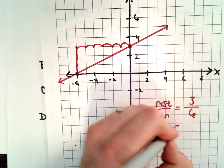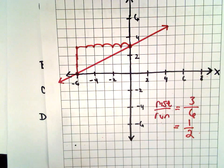So again, 3 over 6, that reduces to 1 half. And that's what we calculated the slope of the line to be. So another way to get the slope.